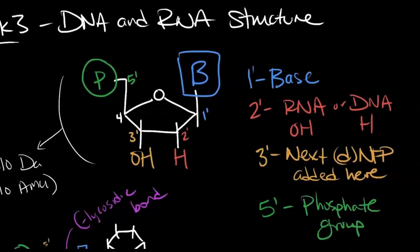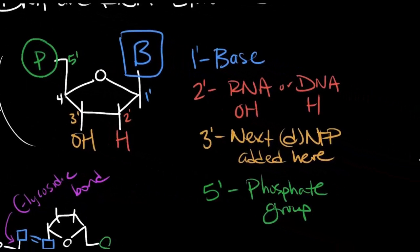To start us off, I've drawn a nucleotide and have labeled the carbons. Though there are carbons in the base, we only worry about the carbons in the sugar. The 1' carbon has the base attached to it. Bases are what make one nucleotide different from another.